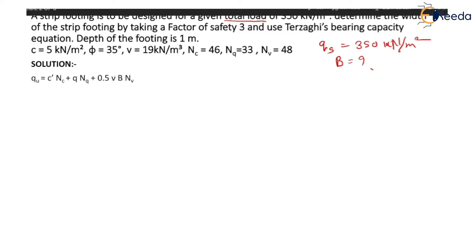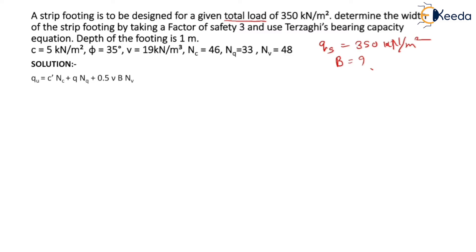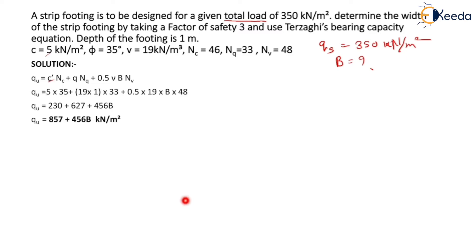As per Terzaghi's equation: Qu = C'·Nc + q·Nq + 0.5·γ·B·Nγ. Substituting all given values: Qu = 5 × 46 + (19 × 1) × 33 + 0.5 × 19 × B × 48, which equals 230 + 627 + 456B. Therefore Qu = 857 + 456B.